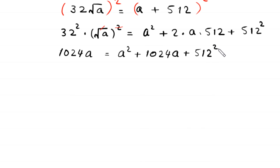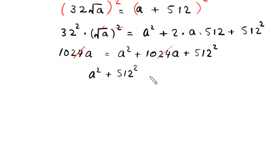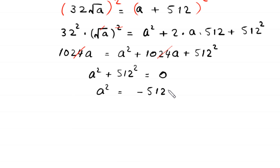Subtracting 1024a from both sides, the 1024a terms cancel, leaving a² + 512² = 0. Moving 512² to the right-hand side gives a² = -512².